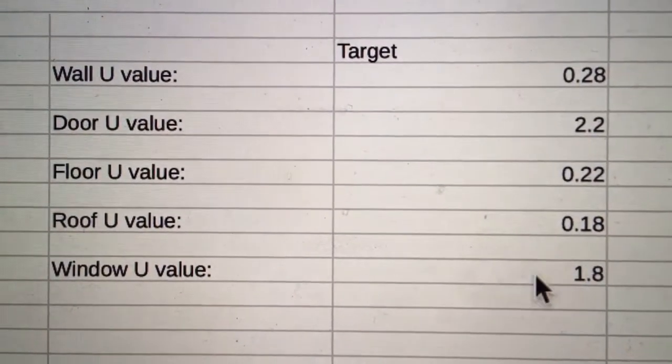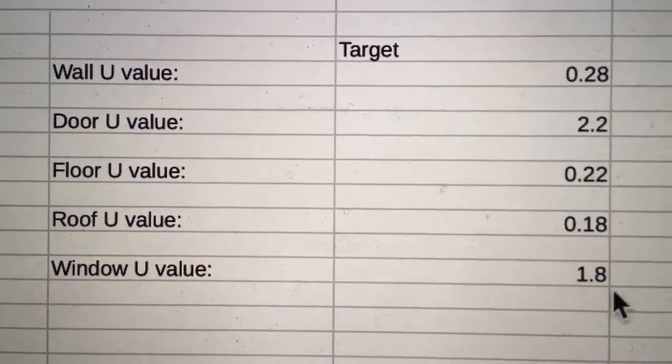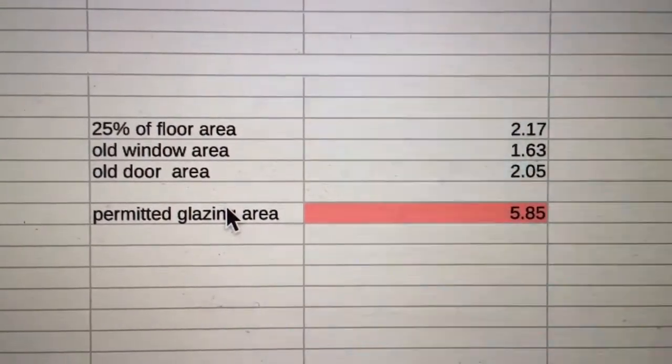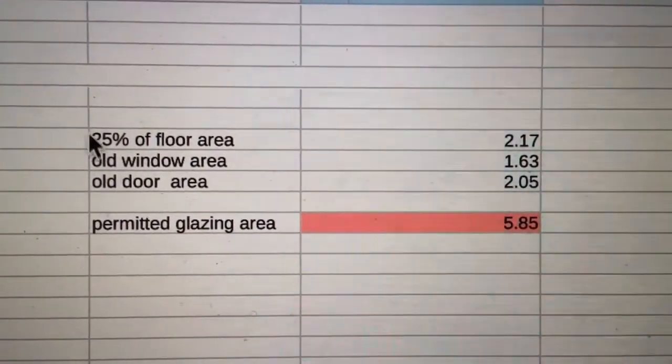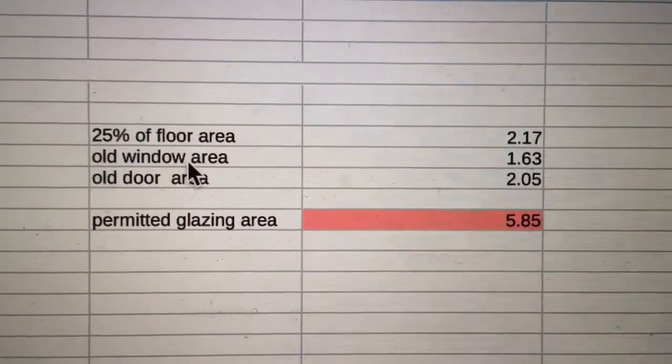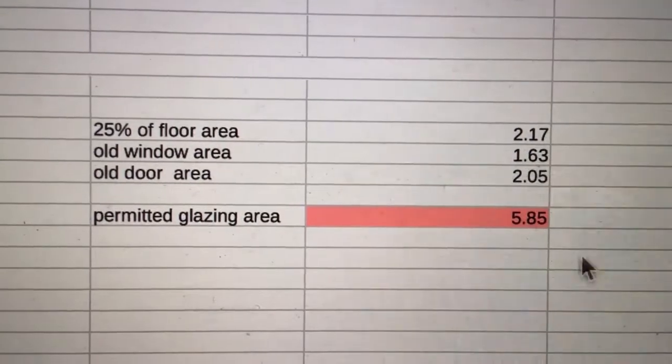You'll notice in the target values that the windows are one of the highest numbers, that is, one of the weakest parts of the building in terms of thermal insulation. When building control let you do the design by hitting target values for each of the elements, the walls, the ceiling, the floor, and so on, they can only do that by limiting how much window you can put in. This is done by a rule of thumb, so that people can work it out easily. I've got to take 25% of the floor area of the new extension, plus the window area of the old extension, plus the door area of the old extension, to give me this figure here.